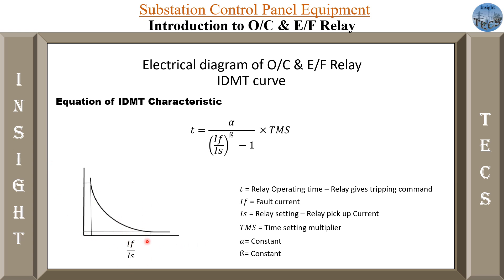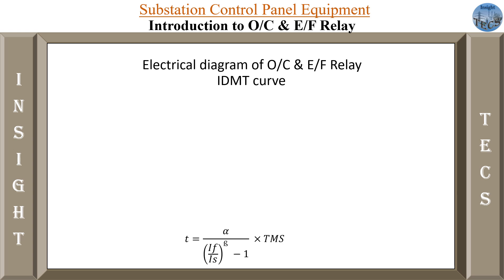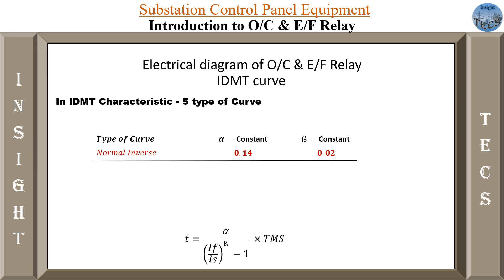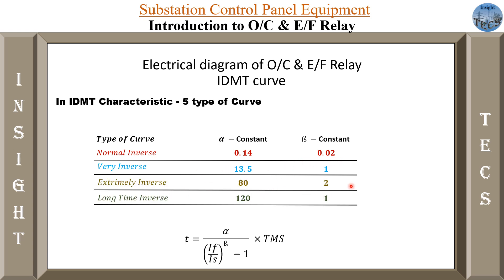This graph plots PSM — the ratio IF by IS — against T, the time taken for the relay to operate in seconds. There are basically 5 types of IDMT characteristics defined by different constant values. For normal inverse, alpha and beta are 0.14 and 0.02. For very inverse, it is 13.5 and 1. For extremely inverse, it is 80 and 2. For long time inverse, 120 and 1. For ultra inverse, 315.2 and 2.5. In general practice, what we use is the normal inverse only.